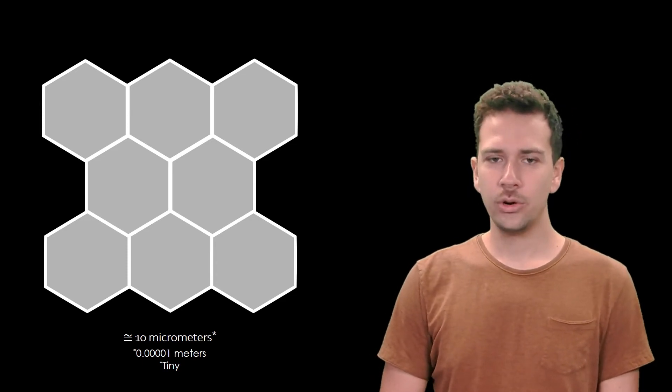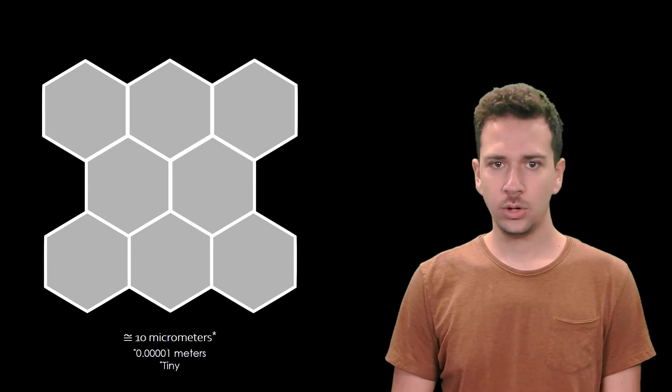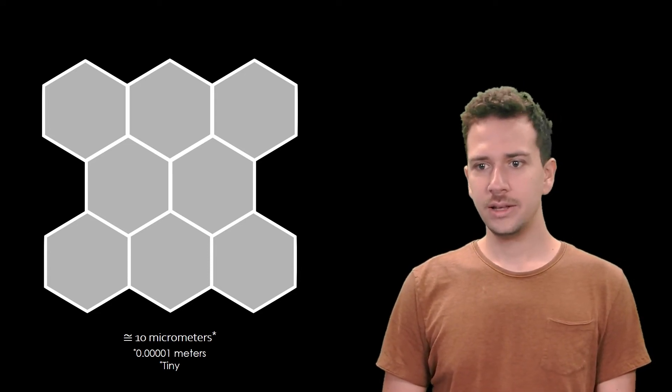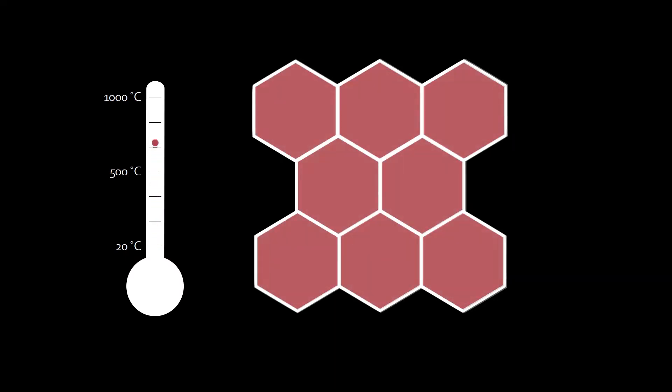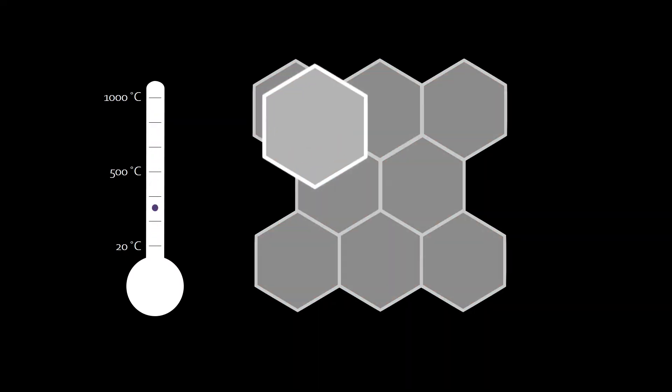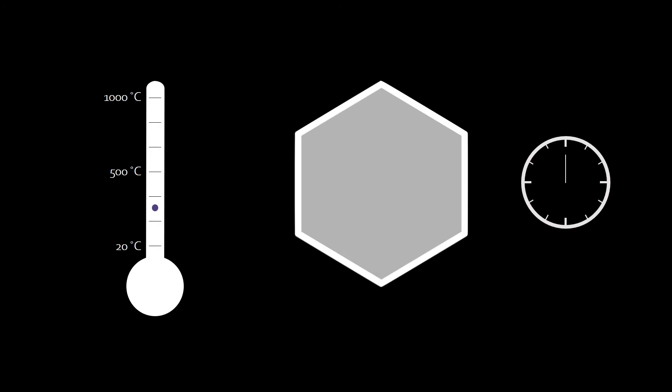The good news is that we are already capable of creating these tiny crystals. The bad news is that it takes too long. We first have to heat the steel until it is red hot, cool it very fast, and then wait for these tiny crystals to form.